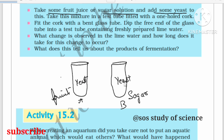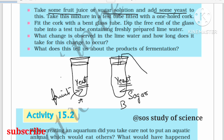Yeast is a unicellular organism. We add yeast to both the sugar solution and the fruit juice. Then close both test tubes with a rubber cork, and fix a bent delivery tube to each cork.